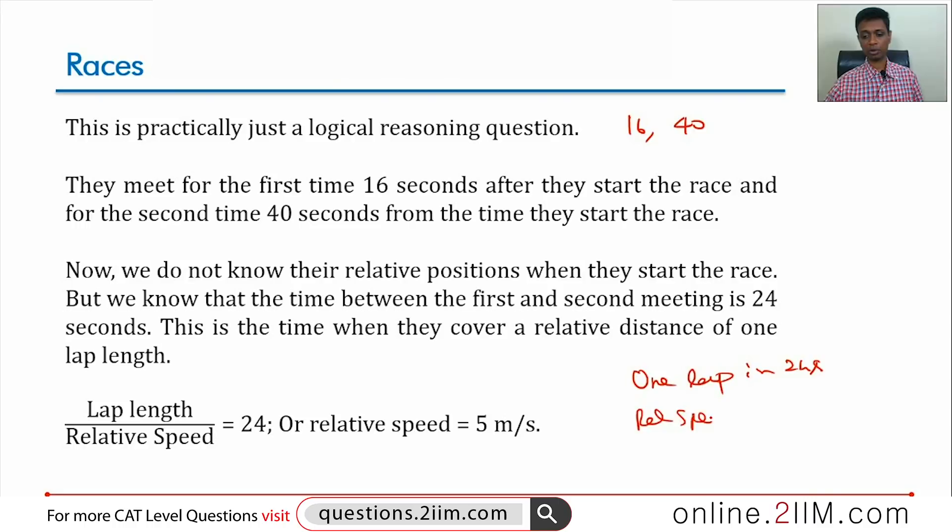Our relative speed, which is A plus B, is 120 by 24 equals 5 meters per second. Why is it A plus B? Because they are definitely moving opposite to each other, they are moving towards each other, which is why this takes this long. Now, their relative speed is 5 meters per second.